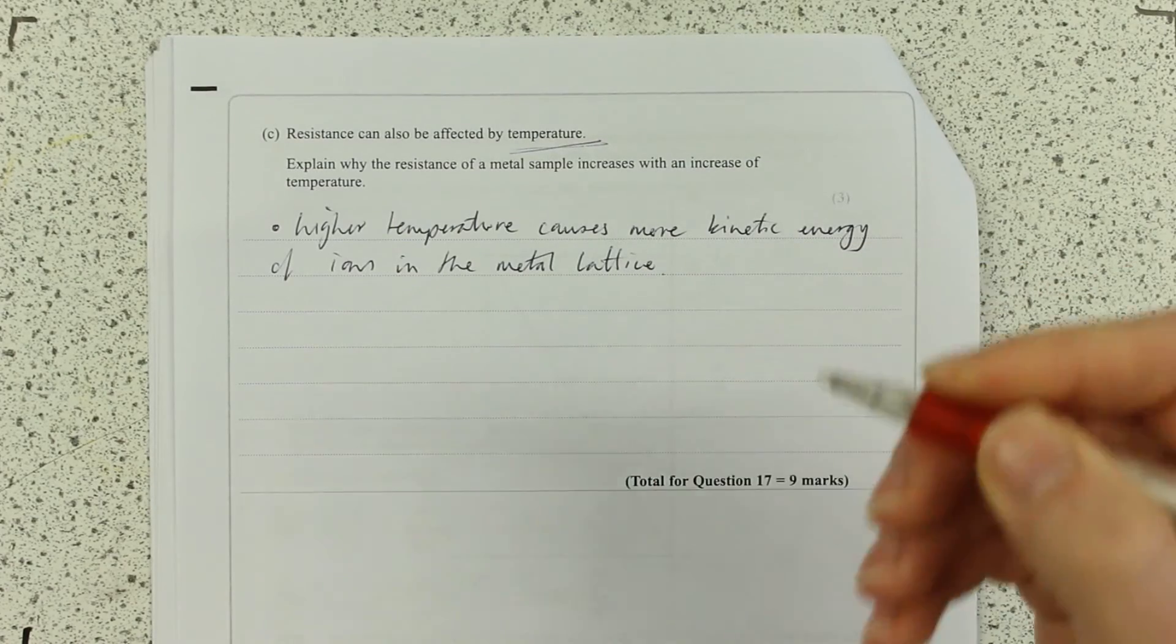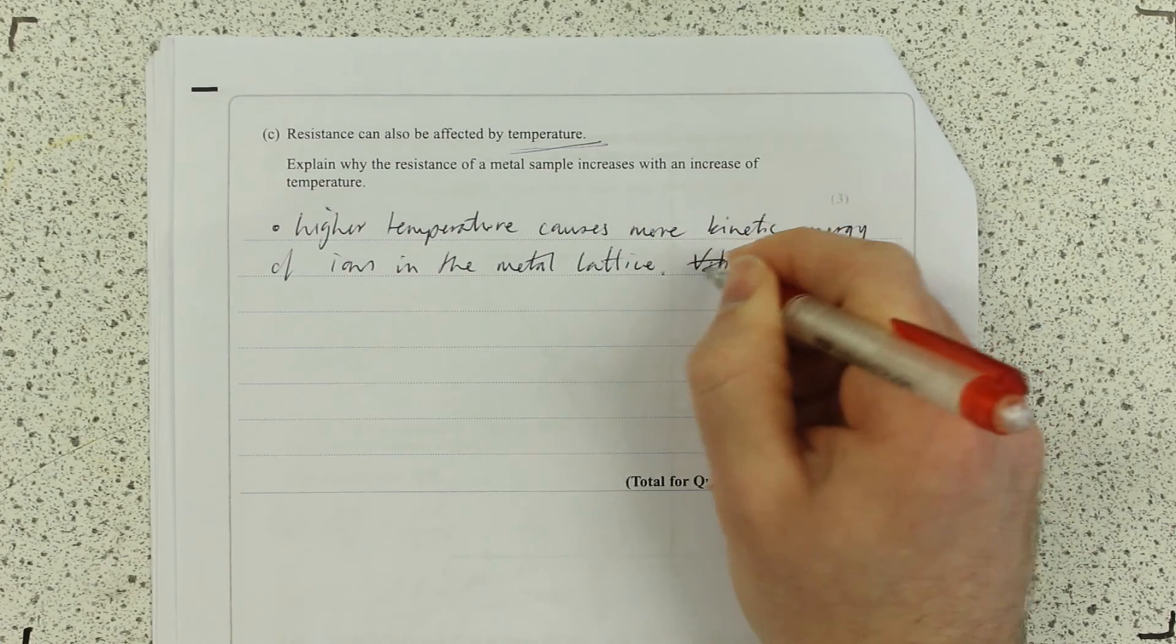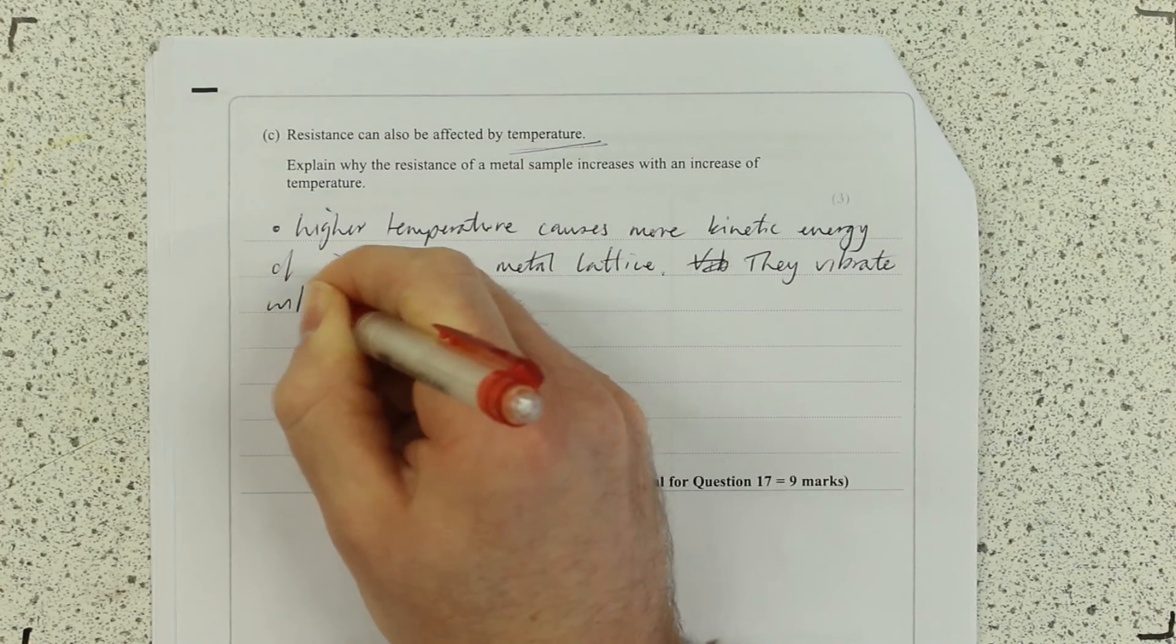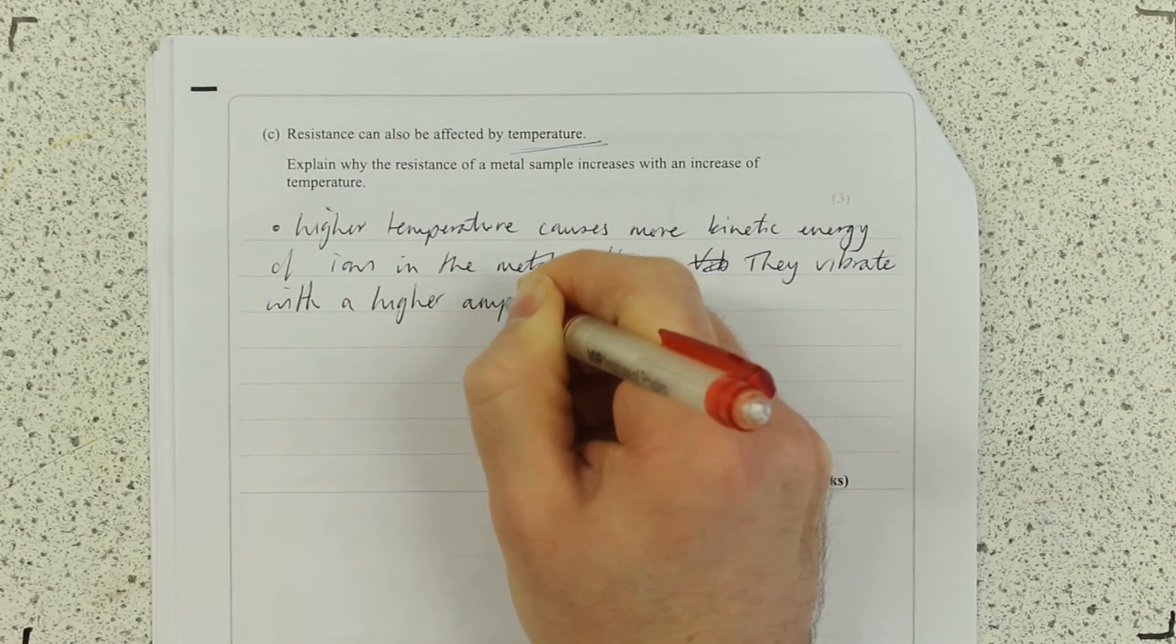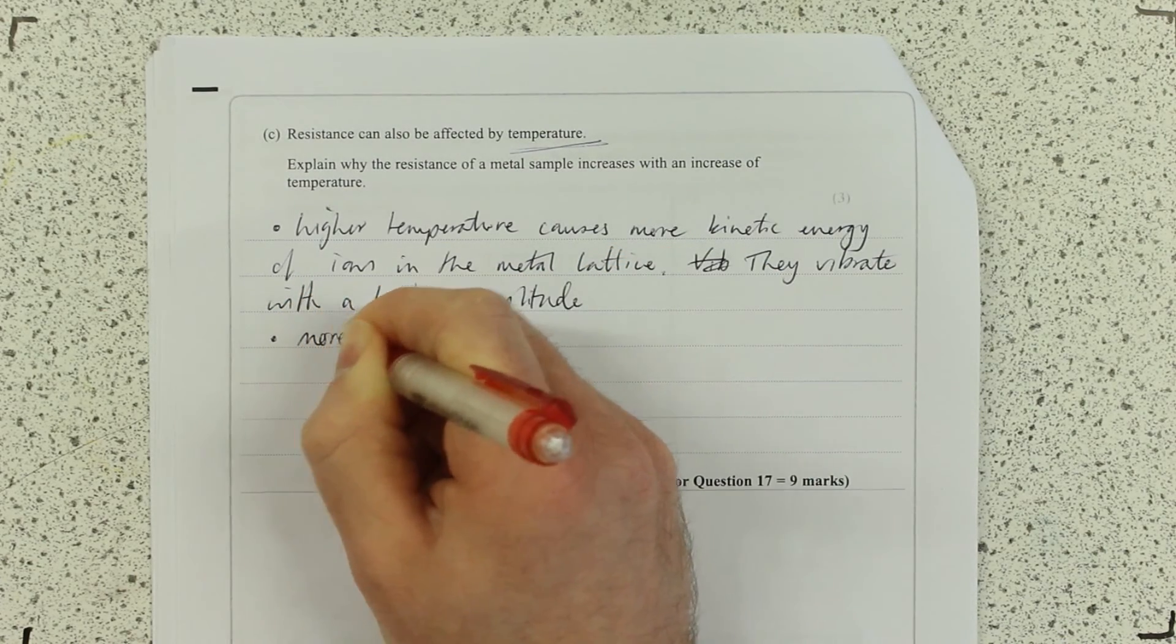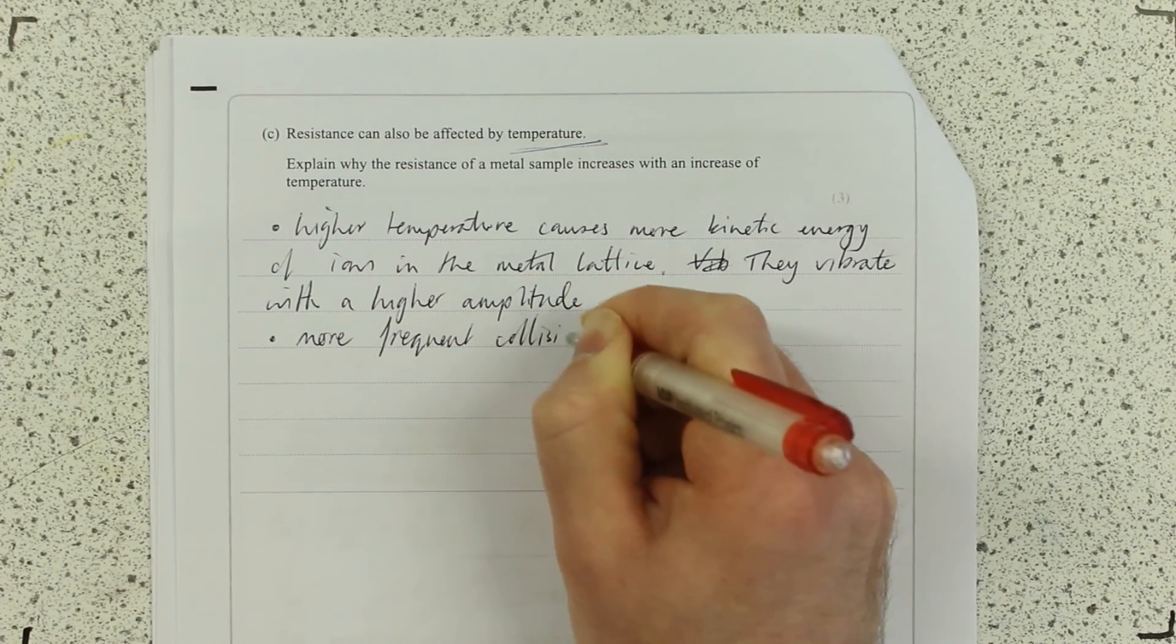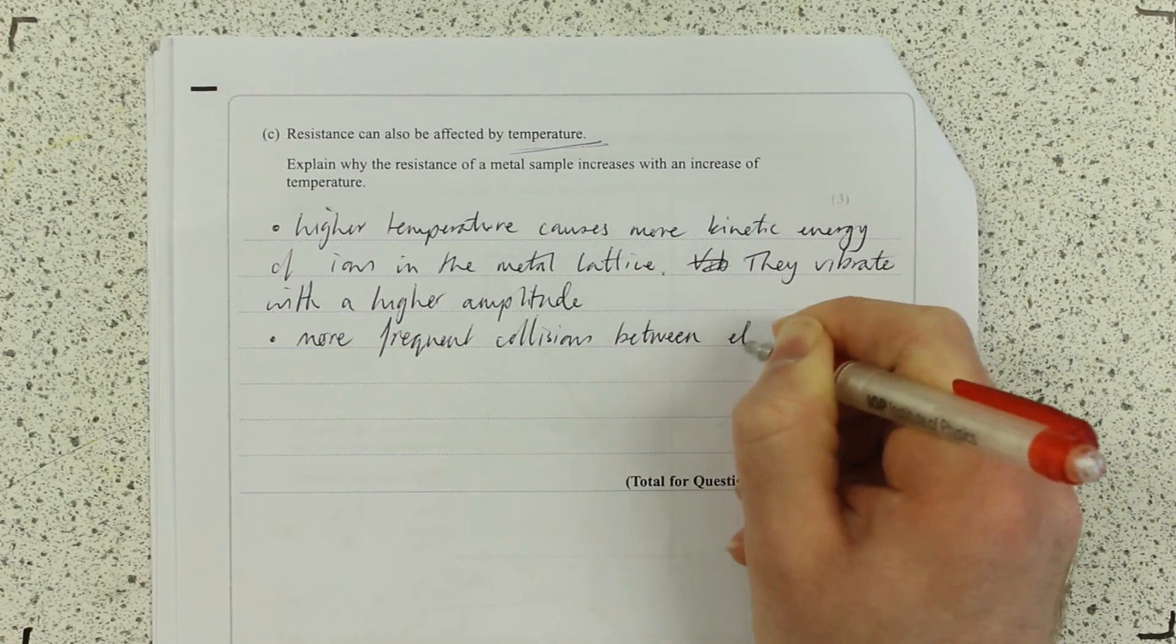Higher temperature causes more kinetic energy of the ions in the metal lattice. Essentially, they're going to vibrate more, vibrate at higher amplitude. This leads to more frequent collisions.